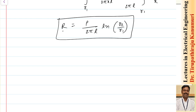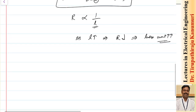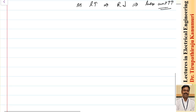You can observe that the insulation resistance is inversely proportional to the length of the cable. Unlike normal series resistance which is proportional to length, insulation resistance decreases as length increases. When insulation resistance decreases, the leakage current increases, meaning losses increase. This is a quite different type of analysis. Let us take one example, and after that we will go to capacitance of a single core cable.